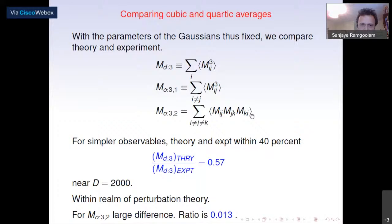This prompts the question: have we really considered the most general Gaussian model compatible with the symmetry? We only chose three quadratic functions in the action. What is the most general quadratic thing we could have? There is a very nice answer from graph theory: you can associate invariant functions with graphs, where the M's correspond to edges and indices correspond to nodes.